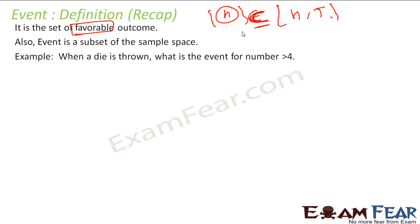For example, when a die is thrown, what is the event of the number greater than four? So in this case, event number greater than four would be five and six, because when you throw a die you get one, two, three, four, five, six. So this is my sample space and this is my event.